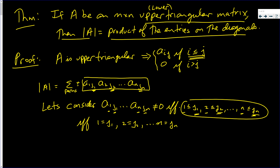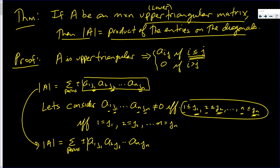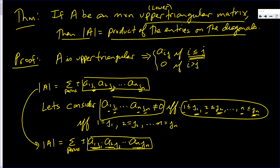So, the determinant of A is the summation over all permutations of plus or minus a_1j1, a_2j2, all the way down to a_njn. But most of these will have at least one zero. Remember, this is a product — if any one of these entries is zero, then the whole product is zero. The only way a term is not zero is if and only if j1=1, j2=2, ..., jn=n.